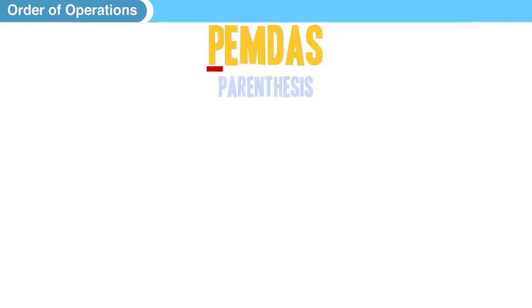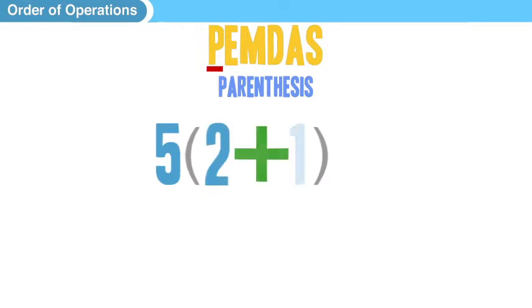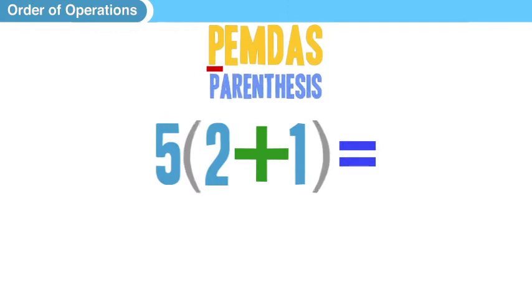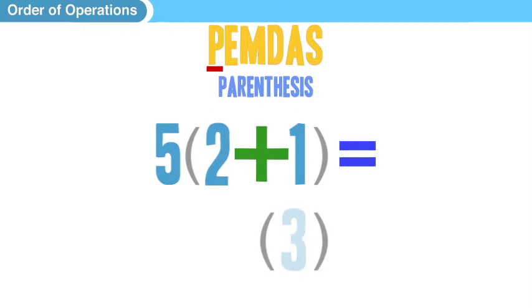So let's start from the beginning. The P is parentheses. And what we have here is 5 outside of the parentheses 2 plus 1. So again, the expression PEMDAS tells us that we should do parentheses first. So we're going to do whatever's inside the parentheses first. So 2 plus 1 is 3, obviously.